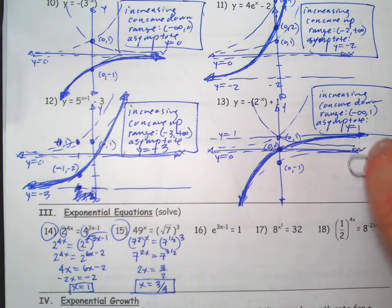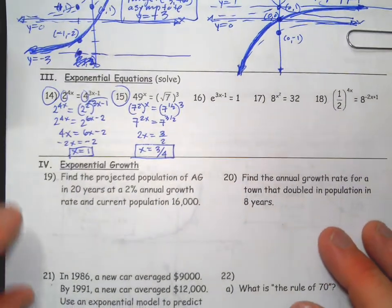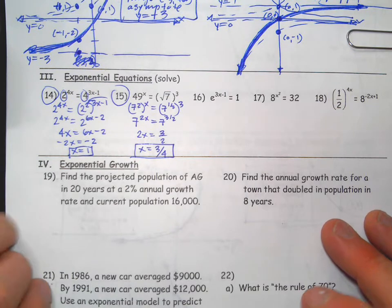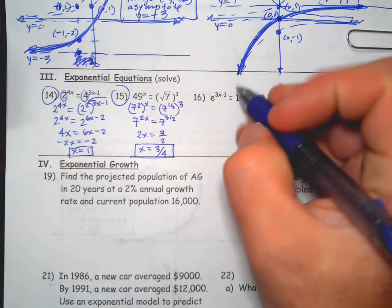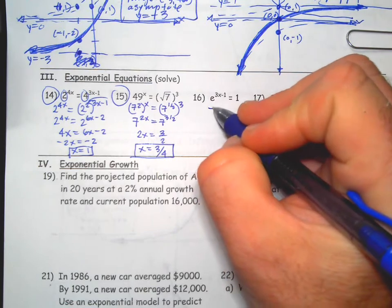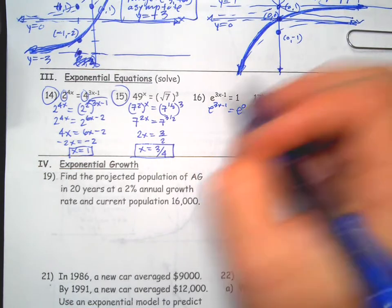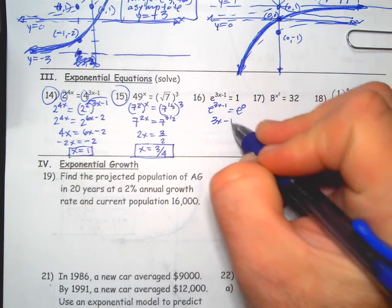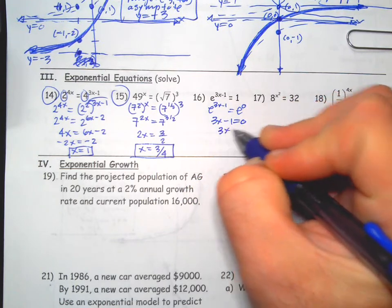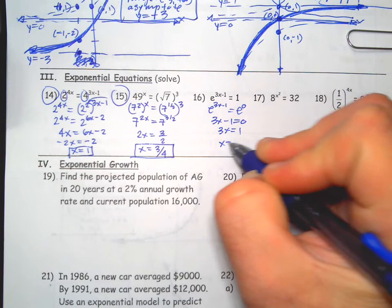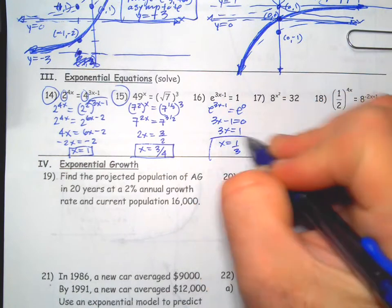14, 15 we did together in class in our notes, so we should have tried 16, 17, 18. We can make both bases the same, or you could say this is e to the 3x minus 1 and you could say this is e to the 0. Set the exponents equal to each other and solve. So that's kind of what we're doing here.